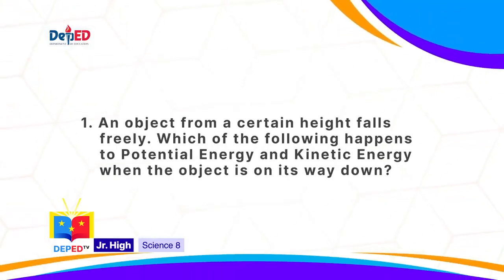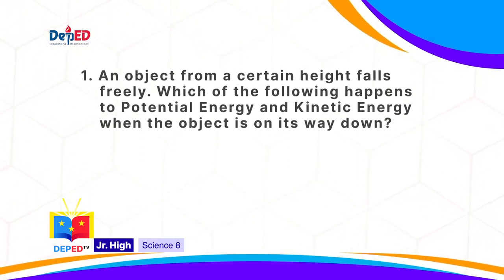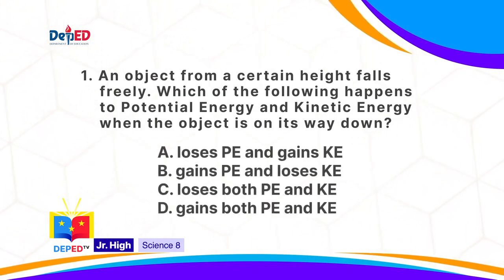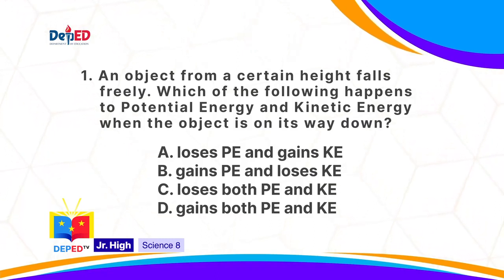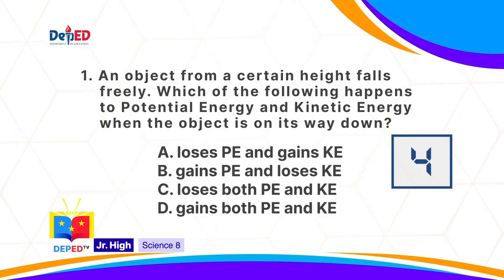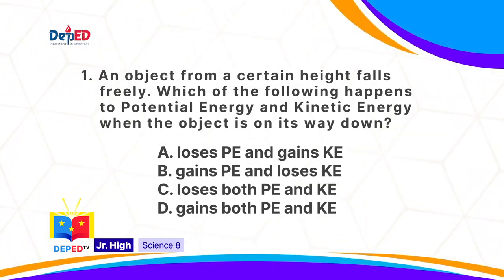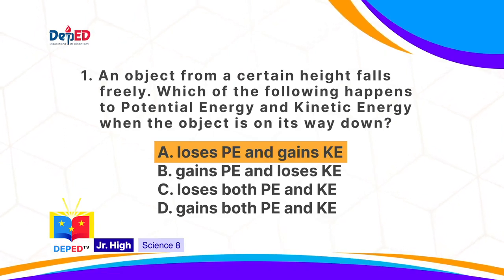An object from a certain height falls freely. Which of the following happens to potential energy and kinetic energy when the object is halfway down? A. Loses potential energy and gains kinetic energy. B. Gains potential energy and loses kinetic energy. C. Loses both. Or D. Gains both. The correct answer is A: loses potential energy and gains kinetic energy.